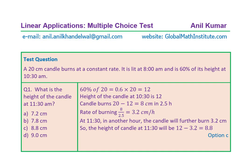Let's see the solution now. A 20-centimeter candle burns at a constant rate — that means it's a linear function. At 8 a.m. it is lit, and it is 60% of its height at 10:30 a.m. 60% of 20 is 12, so the height of the candle at 10:30 is 12 centimeters. The candle burns 20 minus 12, which is 8 centimeters, in 2.5 hours — from 8 to 10:30 a.m. That helps us find the rate of burning: 8 divided by 2.5, which gives us 3.2 centimeters per hour.